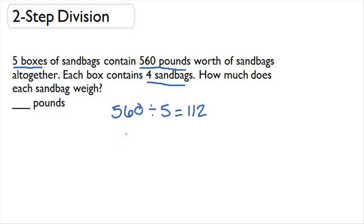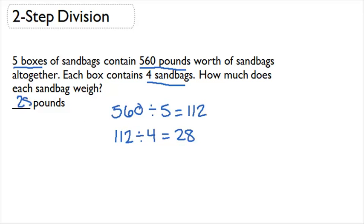Now if we want to know how much each individual sandbag weighs, we're going to take the 112 pounds that each box weighs and divide it by the four sandbags in each box. 112 divided by 4 is 28, so each sandbag weighs 28 pounds.